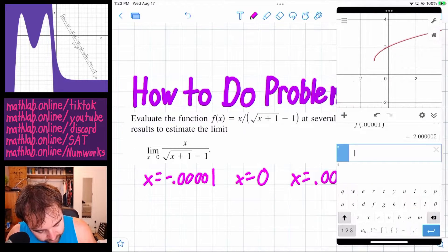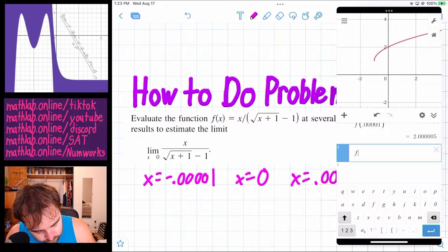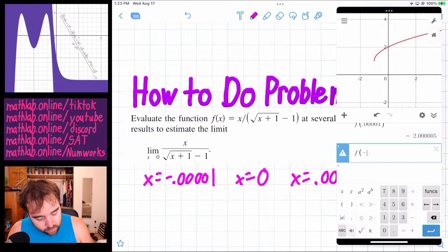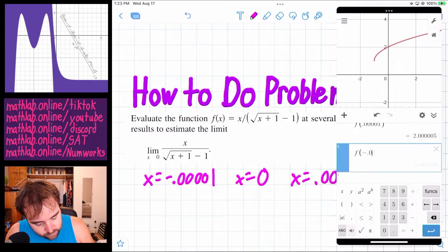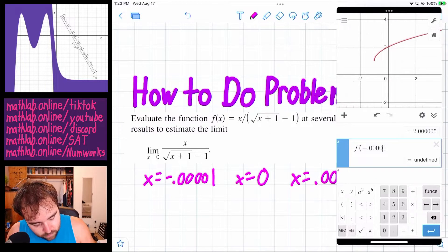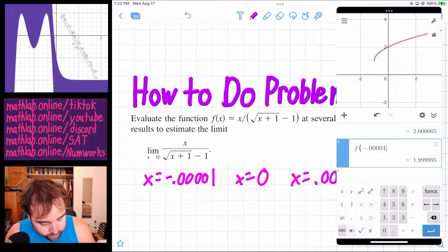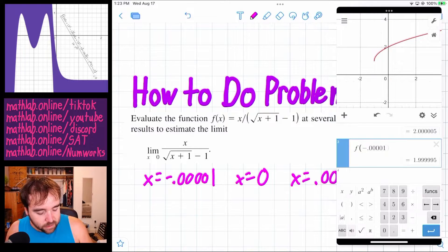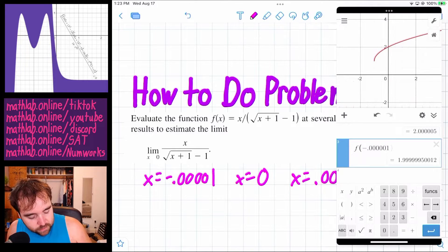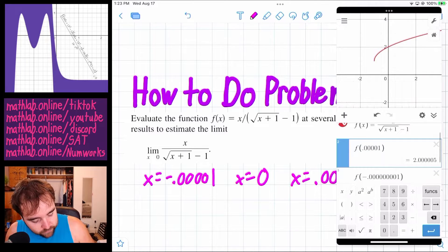And then you plug in f of negative 0.00001, and you see you get also roughly 2, just on the other side of 2. You add more zeros to make it get closer and closer, and you see it gets closer and closer to 2 from both sides.